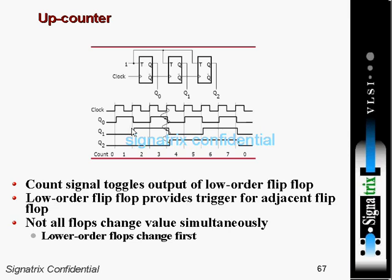At the point where Q0 goes to zero, Q0-bar goes to one, triggering Q1. Q0 is zero so Q-bar is one, giving a positive clock edge to the second flip-flop, which is why Q1 becomes one. Q1 is triggered on the positive edge of Q0-bar. The zero of Q0-bar acts as the clock input to the second flip-flop, which was waiting for a positive edge, not a negative edge.